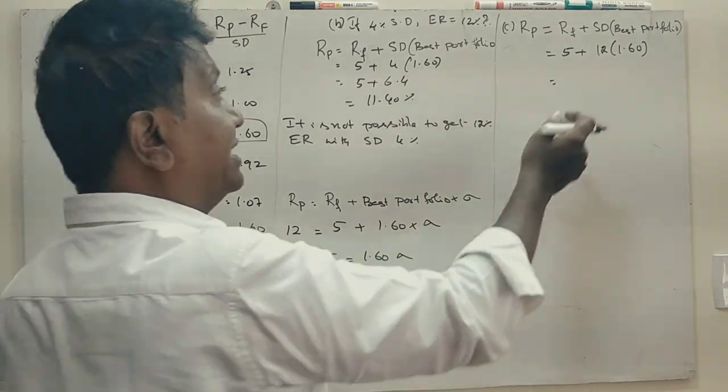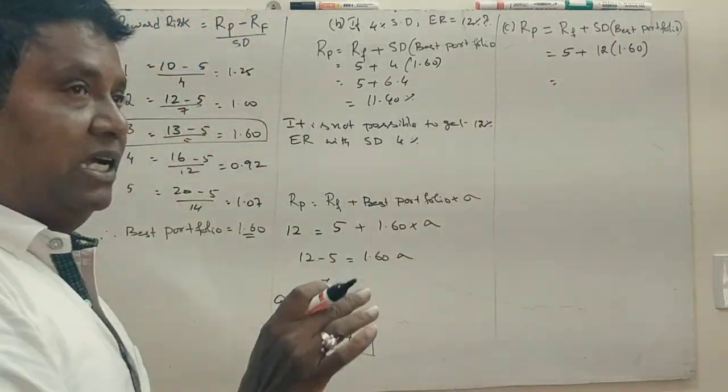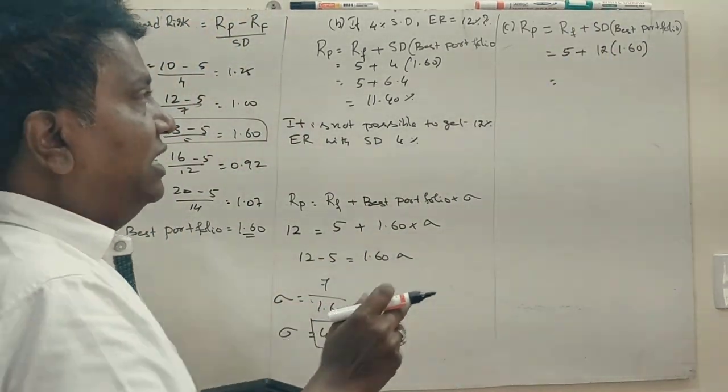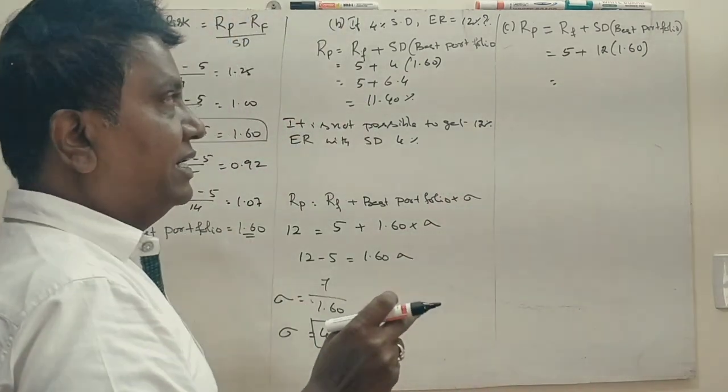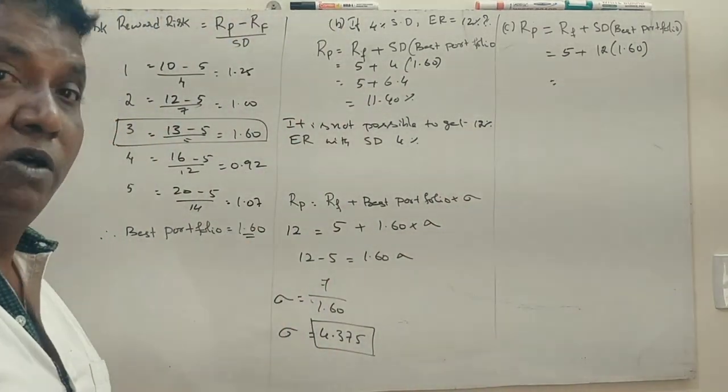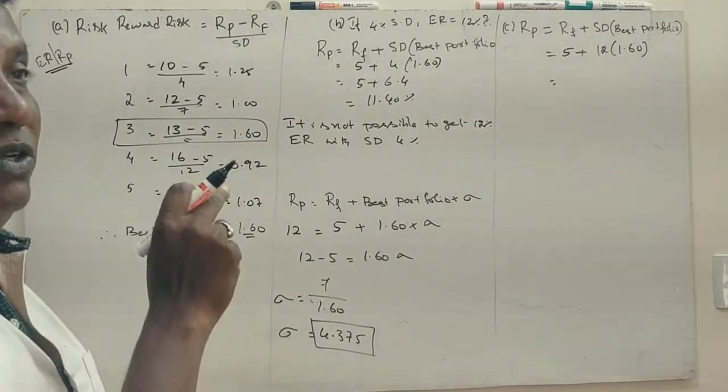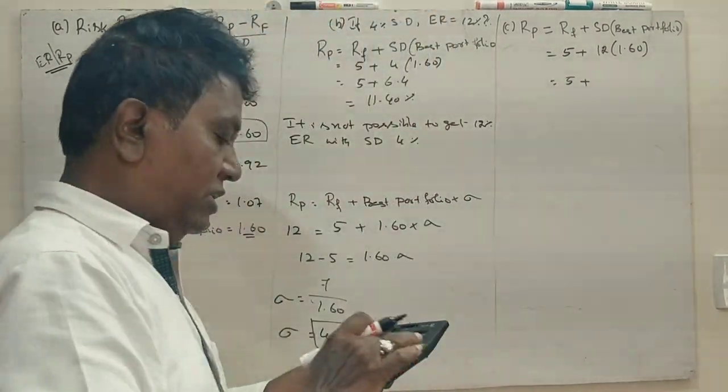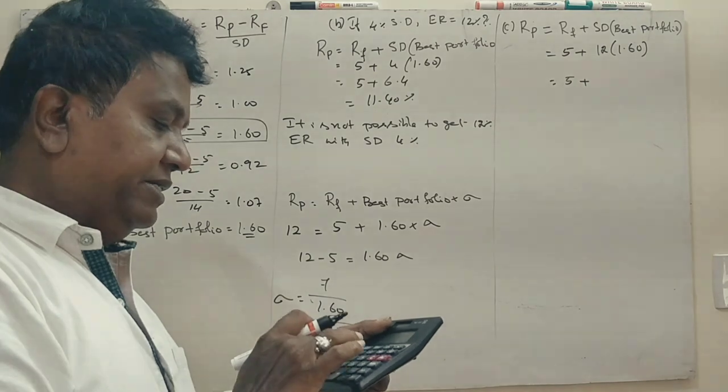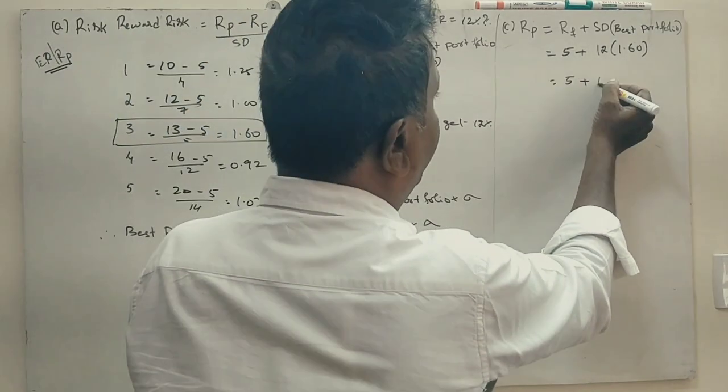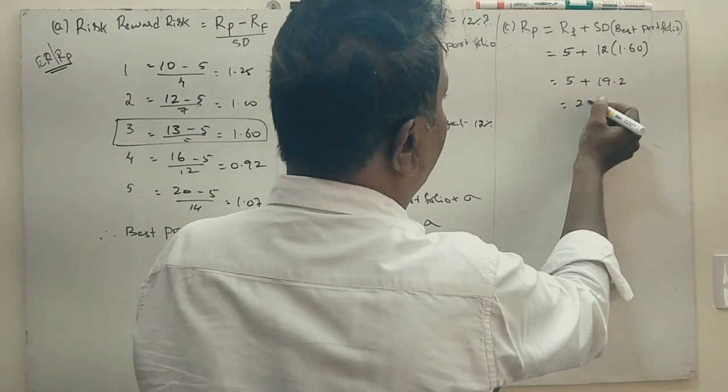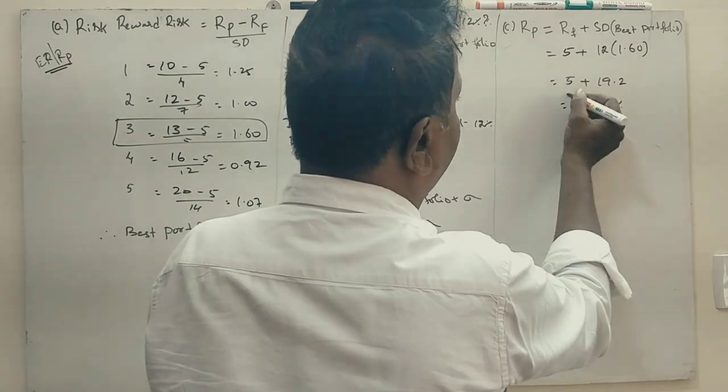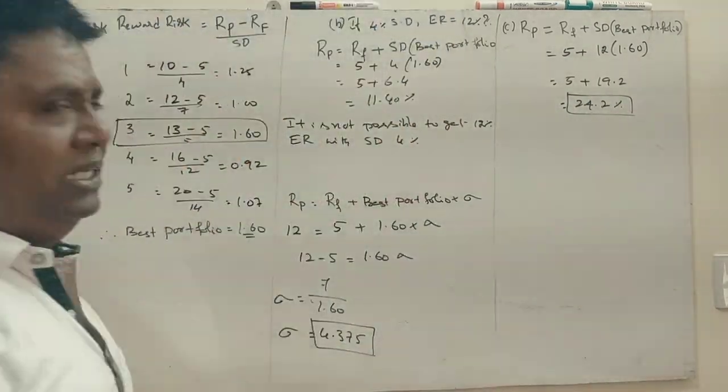12% risk-free return 5%, best portfolio 1.6, so return is 5 plus 12 into 1.6 is 19.2, so total 24.2 percent. So this is the answer for the second question.